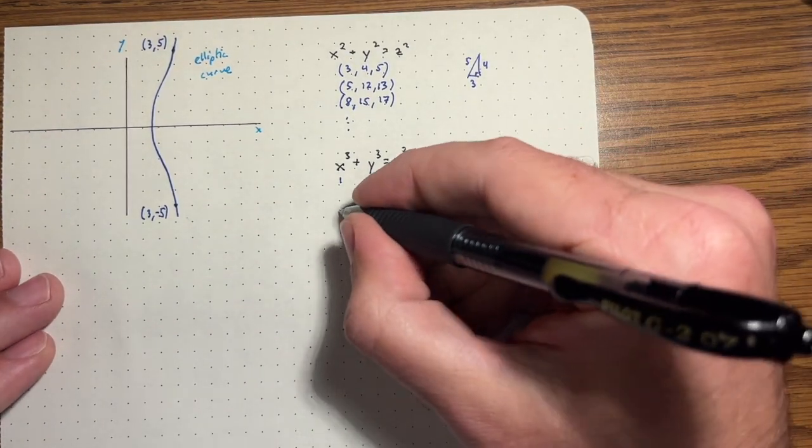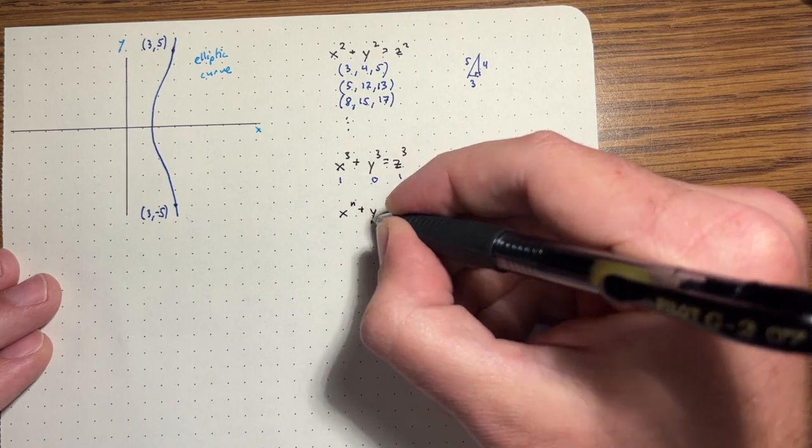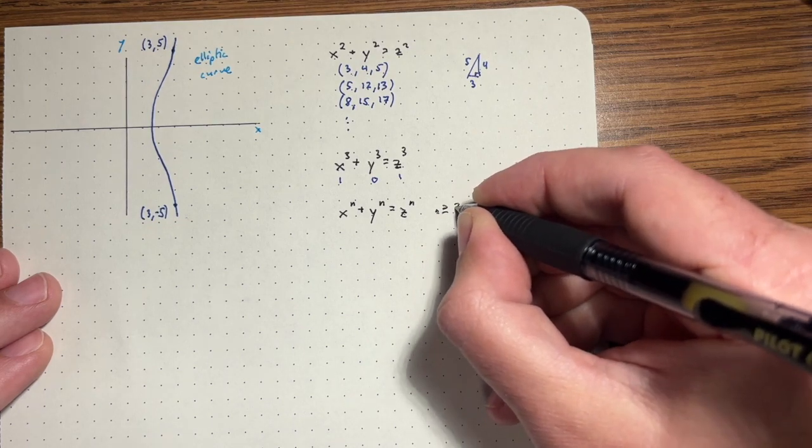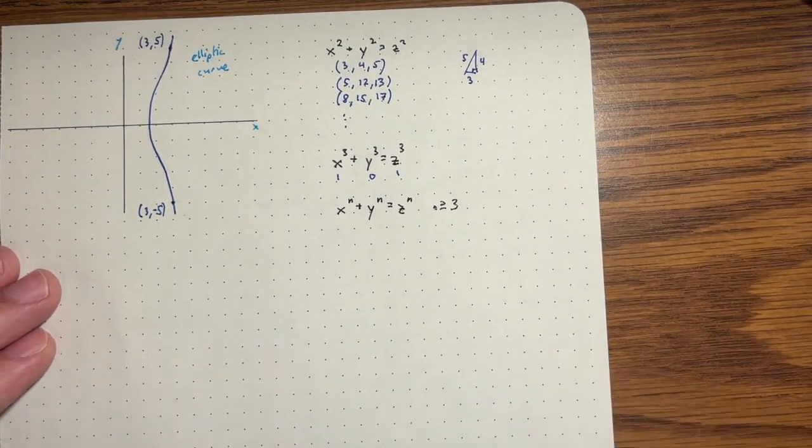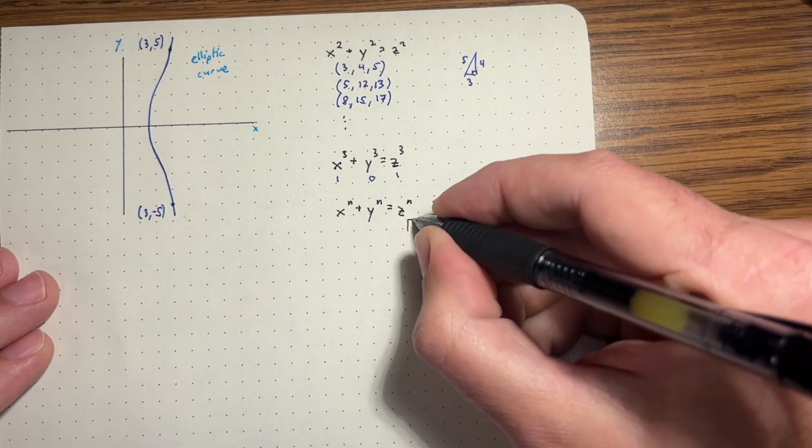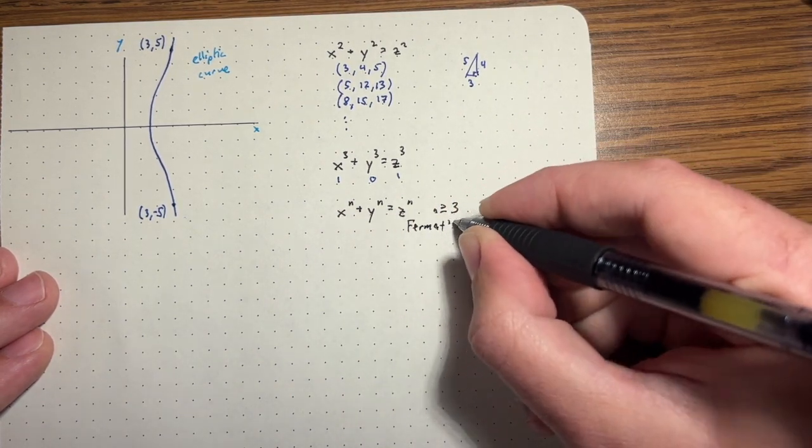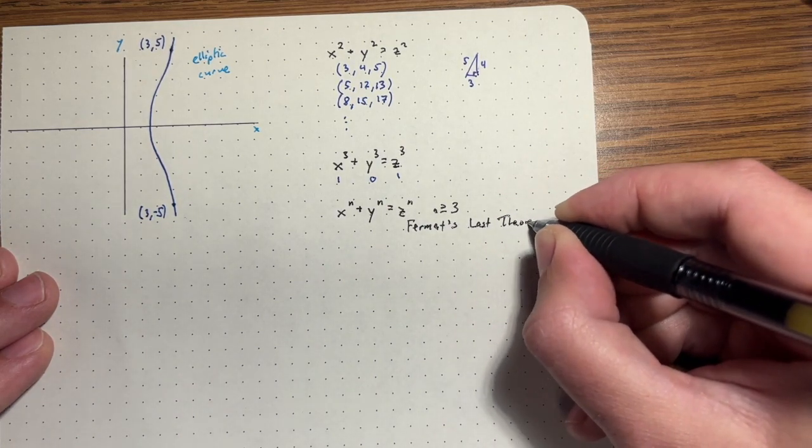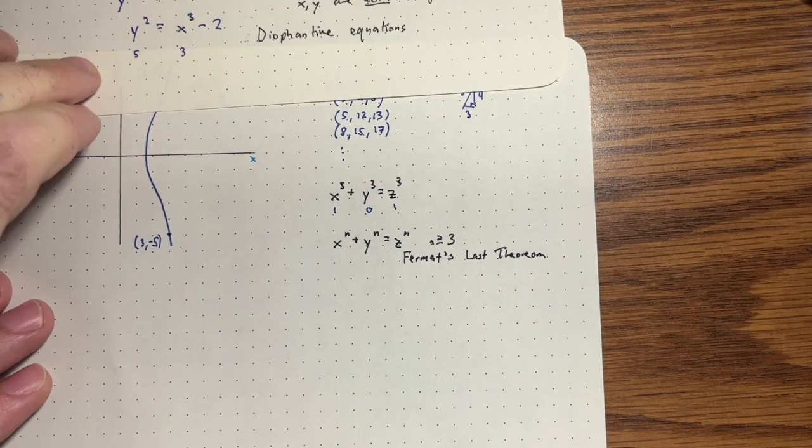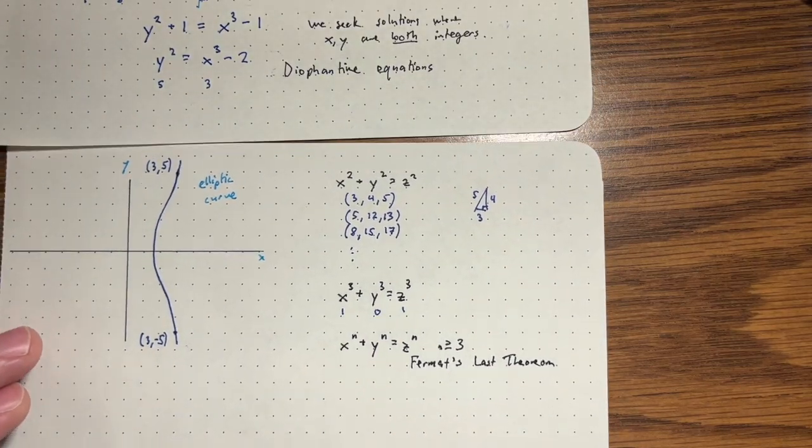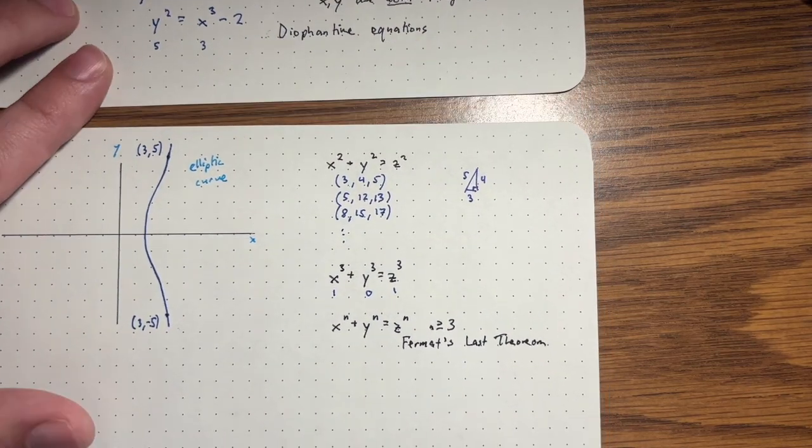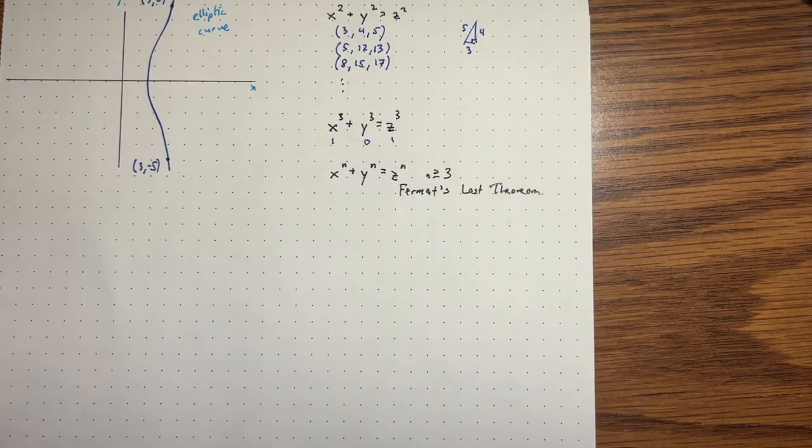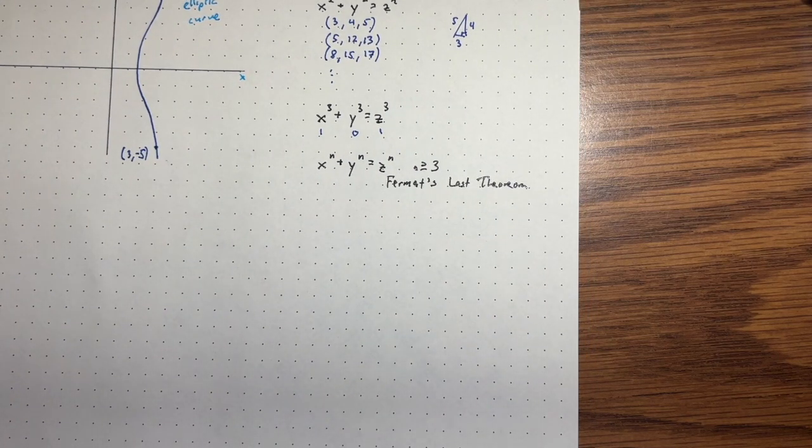And it turns out there aren't any for higher values of the exponent as well. So for any n greater or equal to three. And that's called Fermat's last theorem. This was only proved rather recently, Fermat's last theorem. So it just gives you an idea that diophantine equations, even very simple looking ones, are incredibly complicated. The proof of this was over a hundred pages and used very sophisticated techniques.